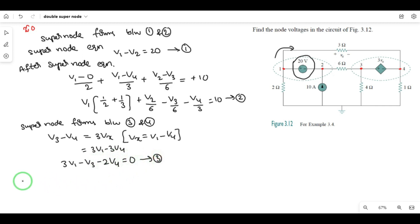Now write the after super node equation for nodes 3 and 4. Two resistors connected, 6 and 4, so V3 minus 0 by 4 plus V3 minus V2 by 6. For node 4, V4 minus 0 by 1 plus V4 minus V1 by 3, equals 0. No current source is connected. This is equation 4.